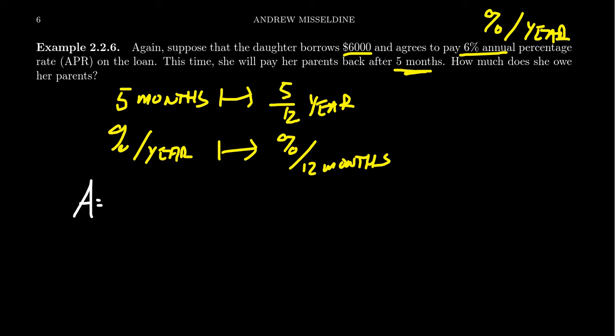The amount that she's going to have to pay back is 6,000 times the principal. Then you're going to get one plus R. I'm going to write the percentage rate as percentage per month. So we're going to get 0.06 divided by 12. That gives you the monthly percentage rate. Then we times that by five months. Now we just have to multiply these things together.